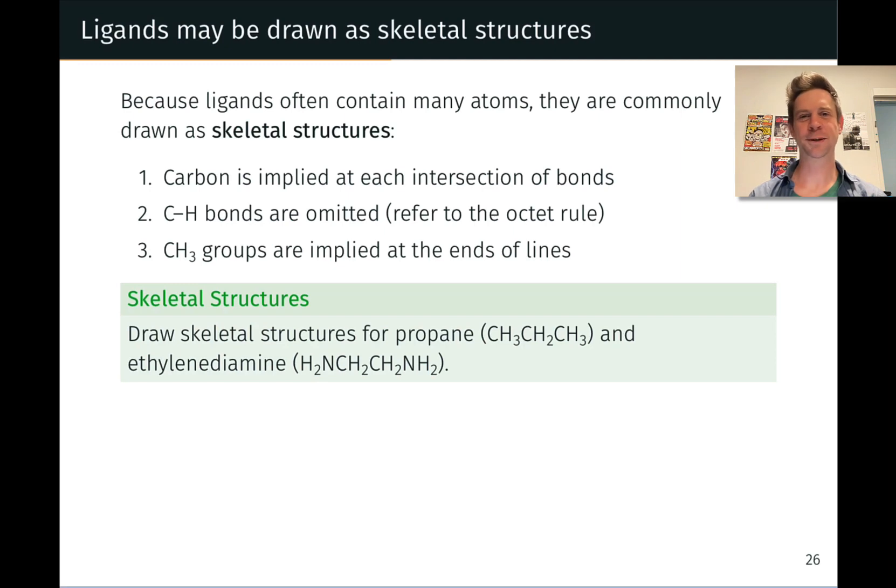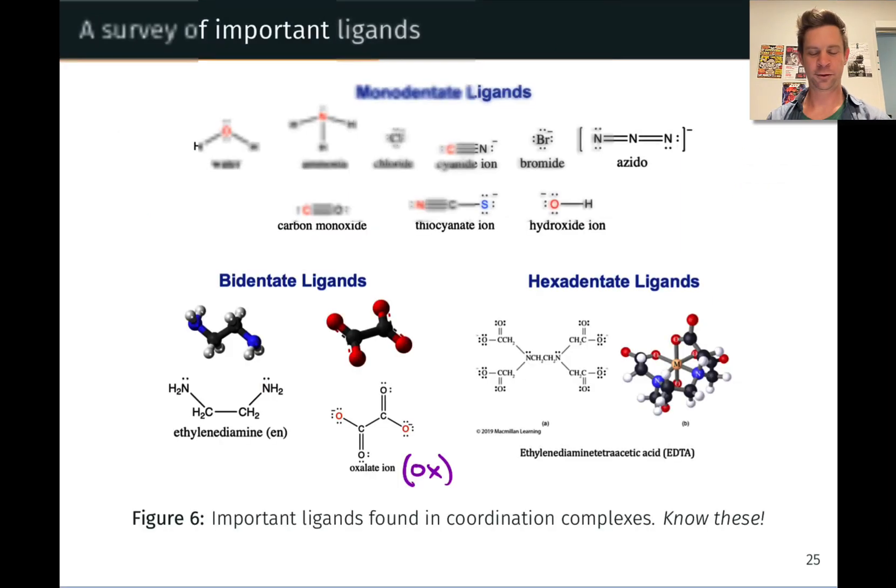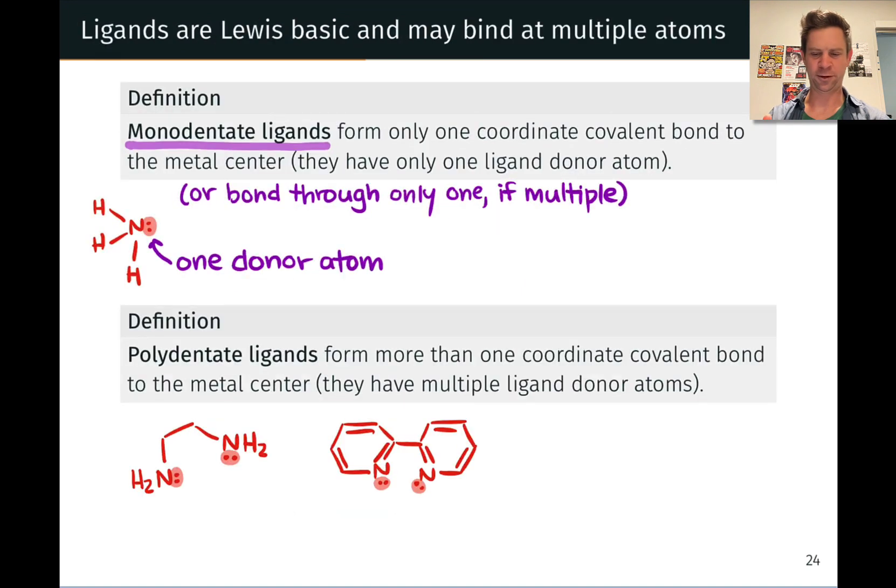Earlier in the video, you may have experienced a little bit of cognitive dissonance when I pulled up Lewis structures for some of these important ligands. For example, this structure of ethylenediamine appears to have two atoms that are unlabeled right here, that don't really appear to have any identity at all. This is a shorthand structure, and these are very common in coordination complexes because these organic molecules have a lot of atoms.